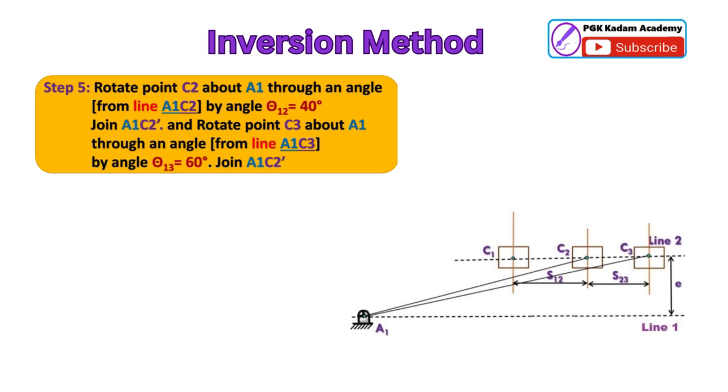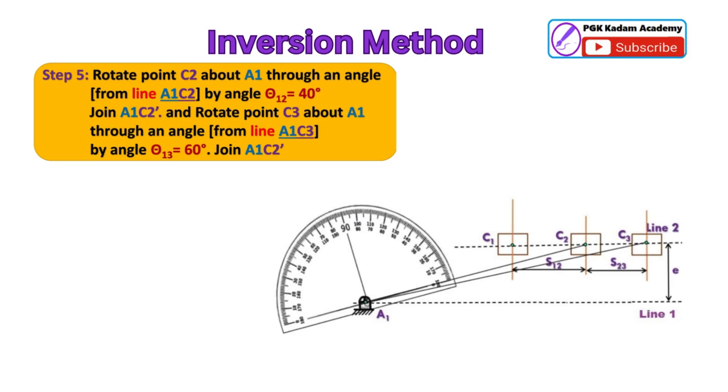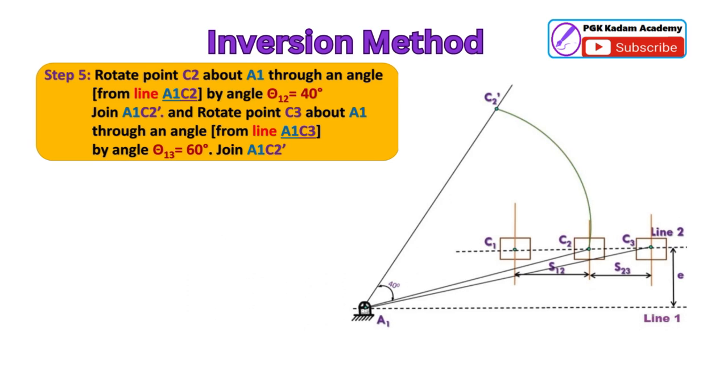Step 5: Rotate point C2 about A1 through an angle from line A1C2 by angle theta 1-C2 equal to 40 degrees. And then join A1 C2 dash.